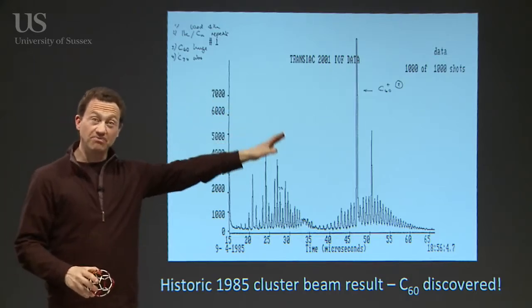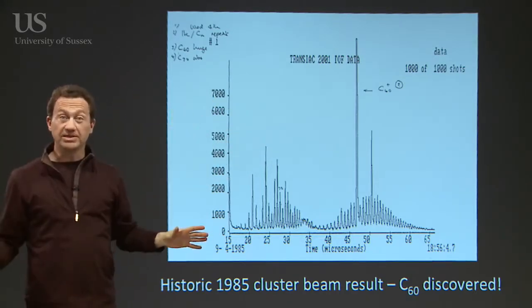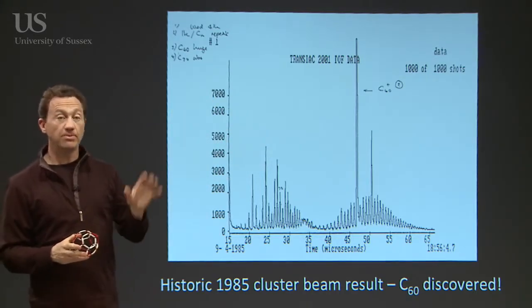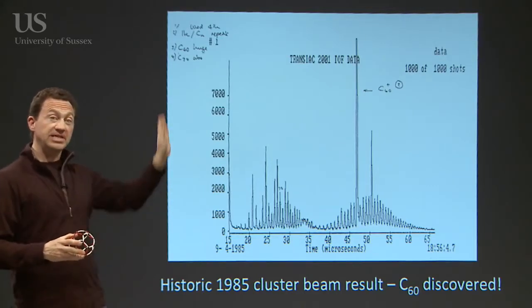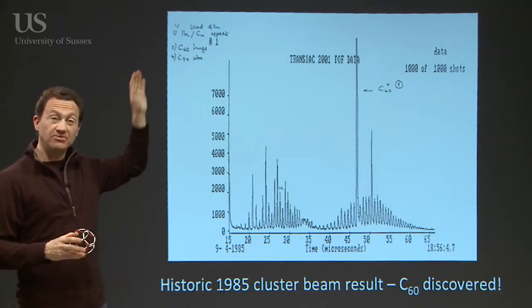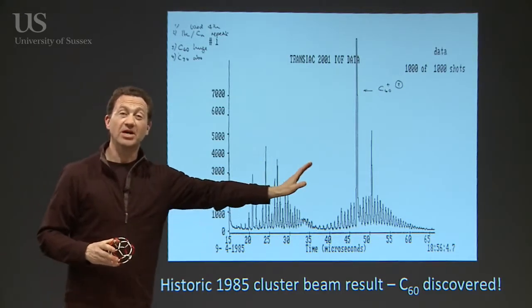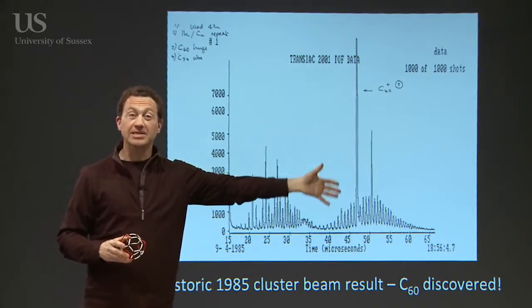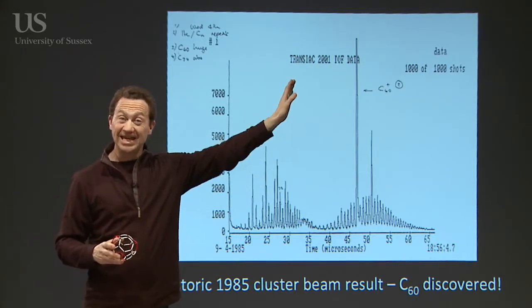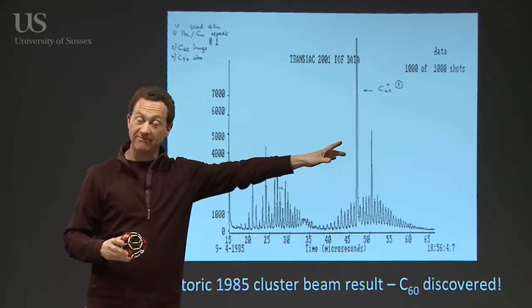But this data was instrumental in discovering the fullerenes, realizing they were there, and trying to understand some of the properties. On this spectra, you've got the strength of the signal going up, and along here, you've got the size of the carbon molecule. And right here, you can see there's an enormous peak for C60, and further on, there's another peak for C70.